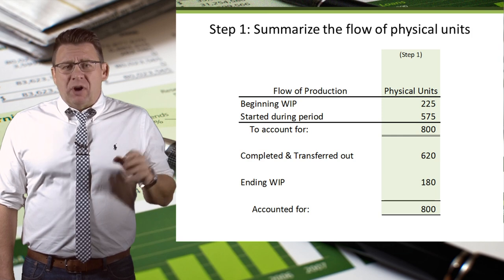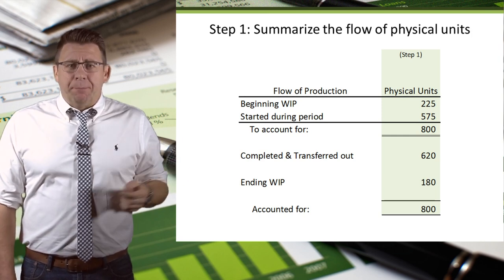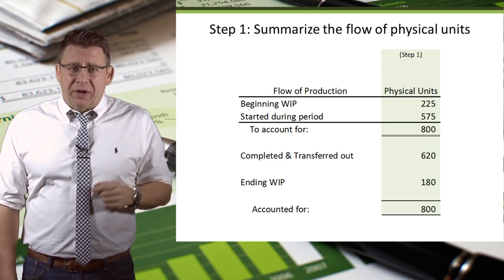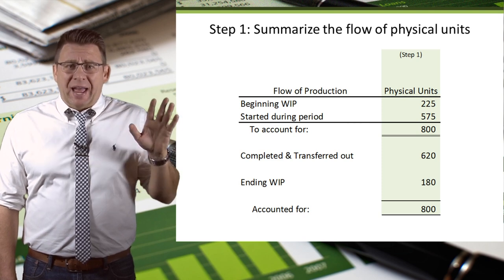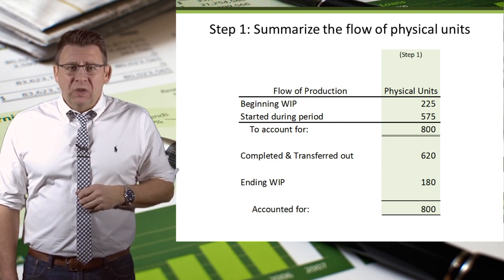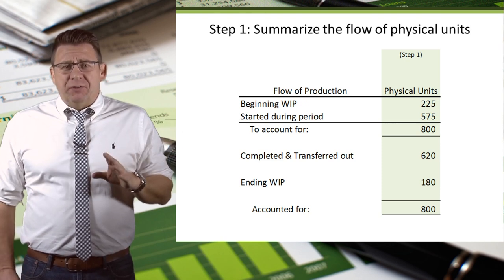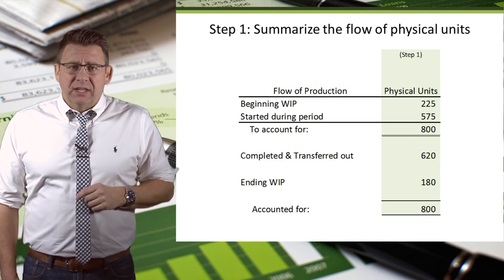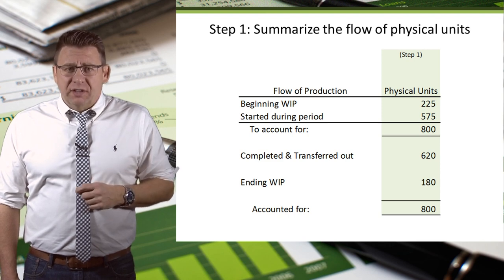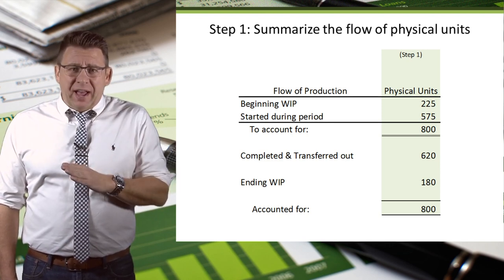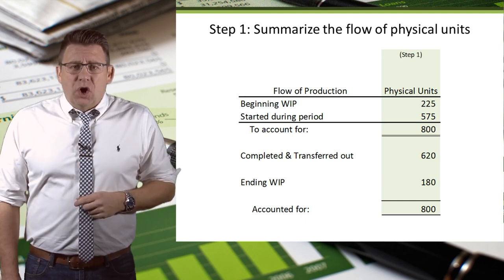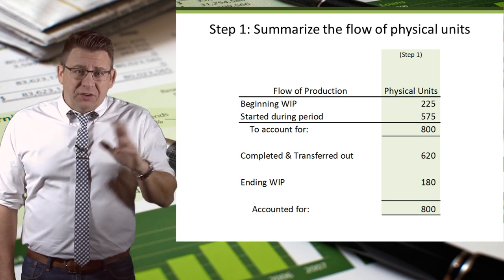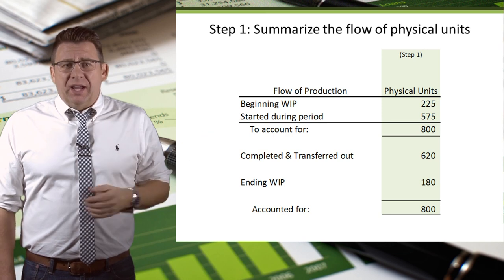The first step is summarizing the physical flow of units. In this example, WIP has 225 partially completed units from the prior period, shown here as beginning inventory. Additionally, 575 units were started during the period, so we need to account for 800 units. There are only two things that can happen to our units: either they were completed and transferred out to the next process, or they remain as partially completed units in ending inventory. Either way, the total needs to be 800, and you can see from here that it is.